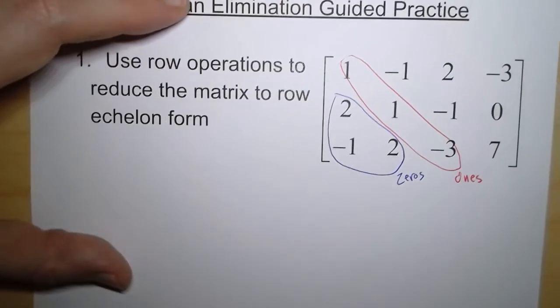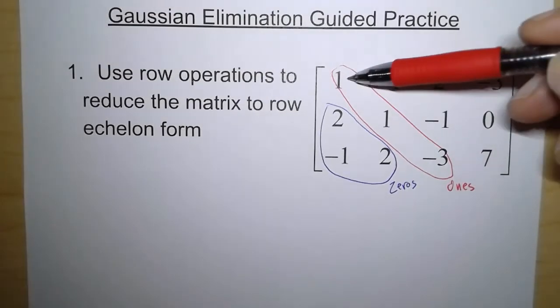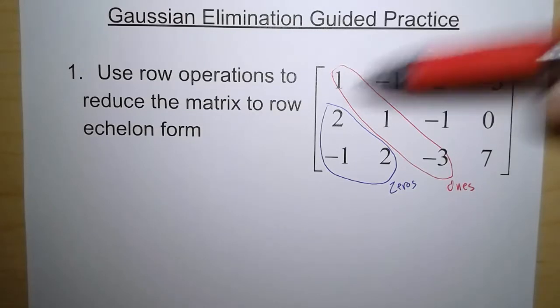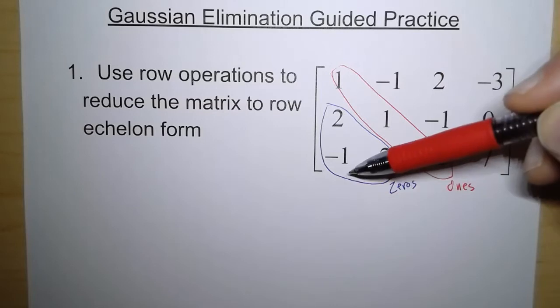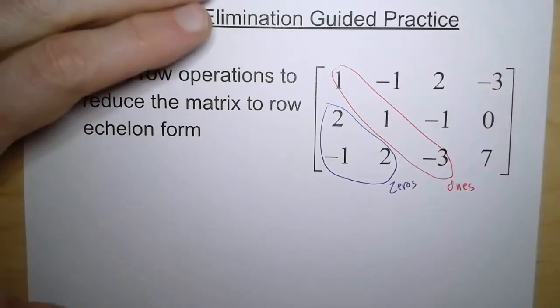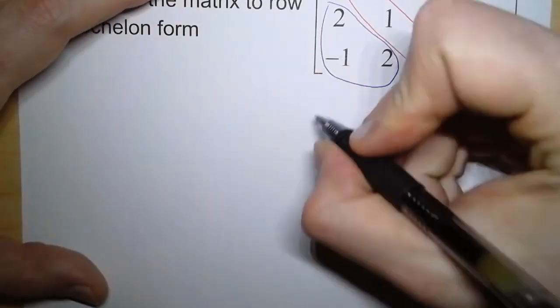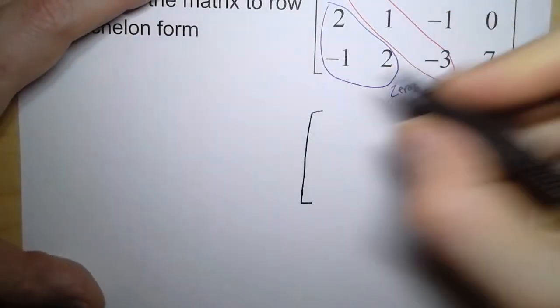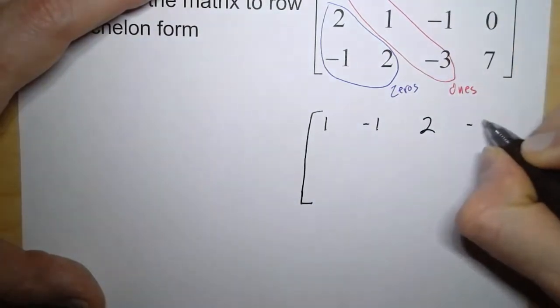We start in the upper left-hand corner. We want that to be a one. Now what's nice is it already is a one. So once we get this to be a one, the next thing we do is look beneath it and say everything else we have to change. Everything else has to be a zero now. So let me write this first row again: 1, negative 1, 2, negative 3.